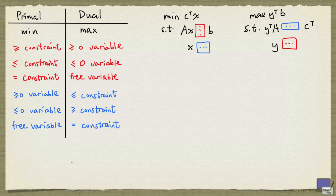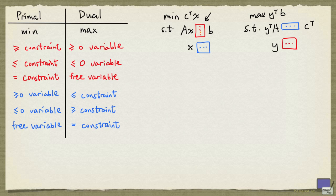Here is a table that shows how to form the dual problem when the primal problem can have any type of linear constraint, and the primal variables can be greater than or equal to zero, less than or equal to zero, or have no such constraint. Each constraint in the primal can be of a different kind, and each variable can be non-negative, non-positive, or free. What appears in the dual will depend on the primal variables, and what dual variables appear will depend on the primal constraints.